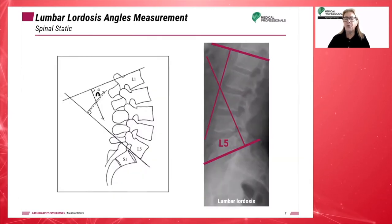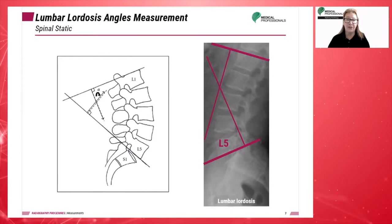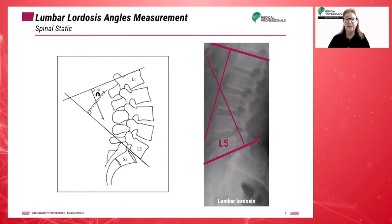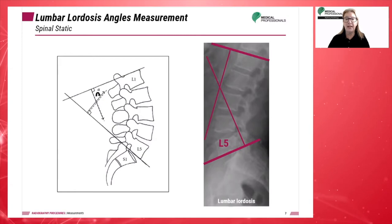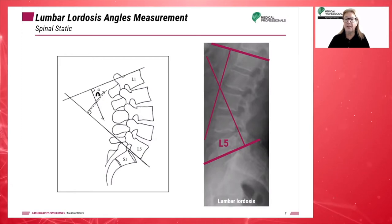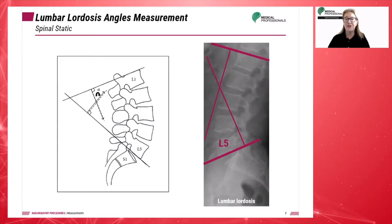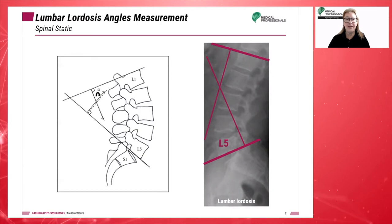Here we can see how the lumbar lordotic angle is measured. Using Cobb's method, tangent lines are drawn along the upper plane of the L1 lumbar vertebra and the upper plane of the S1 sacral vertebra. Then perpendiculars to each of these two lines are added to form the angle.